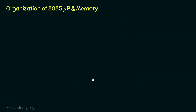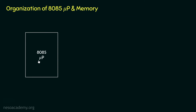In this organization we are not going to use all 40 pins of the 8085 microprocessor. In this block diagram we will only use the pins necessary for this kind of organization. We will have the address lines, the data lines, and the ALE pin to differentiate whether the bus is carrying data or address. These are all the necessary pins of the 8085 microprocessor.